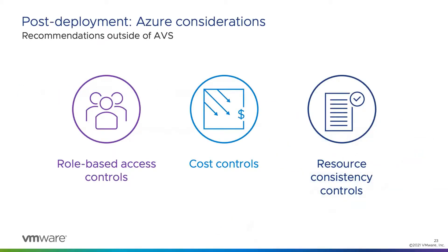On the Azure side, we want to make sure that we've implemented the right role-based access controls. We want to make sure that we're supporting the separation of concerns. We want to limit access to that private cloud object, as it has the keys to the cloud admin credential, and anyone with access to that object can log into vCenter. But we don't want to restrict that too much because our vSphere admins may need access to that object to perform administrative tasks through the Azure portal. There are some features that are only available through that portal.